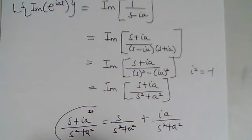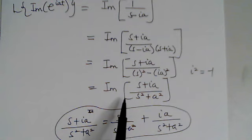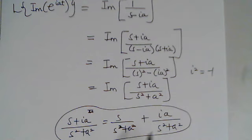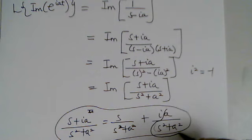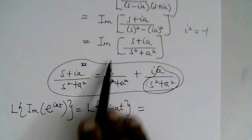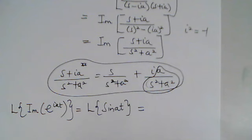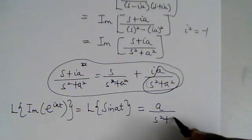We need to take the imaginary part of this expression, which is where i is attached. So the Laplace of the imaginary part of e^(iat) — which equals the Laplace of sin(at) — is the imaginary part of this, giving us a/(s² + a²). That is the result.